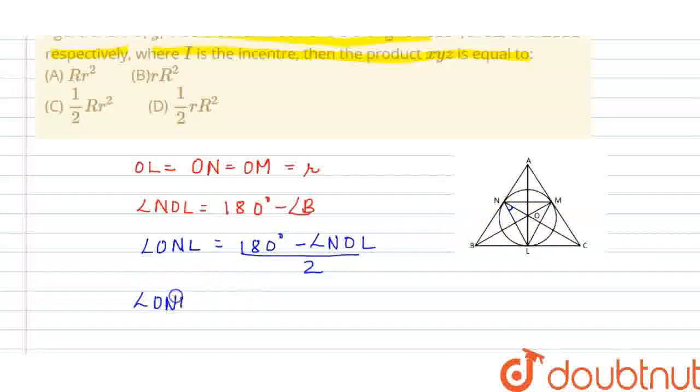So, what would be the final result? It would be ONL equals 180 degrees minus this thing. So, this is 180 degrees, I am opening up the bracket, plus angle B upon 2. This cancels with this, so we are left with angle B by 2.